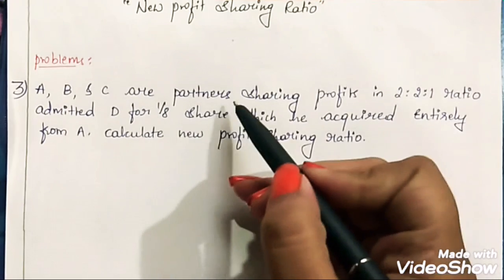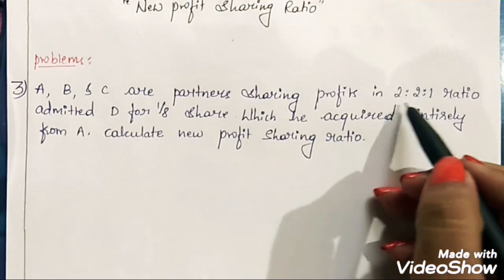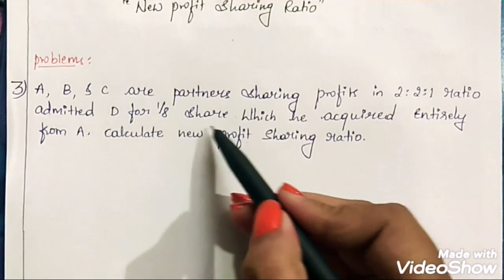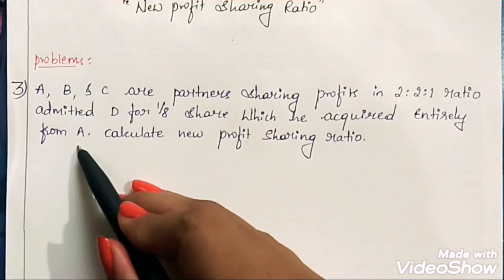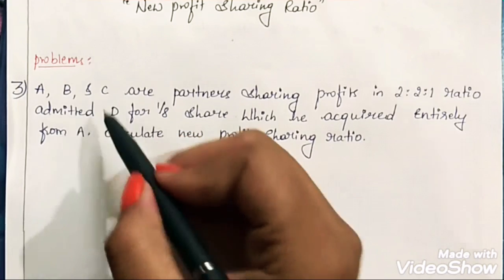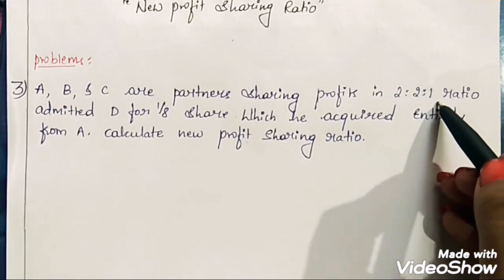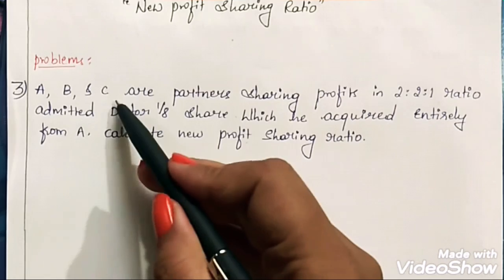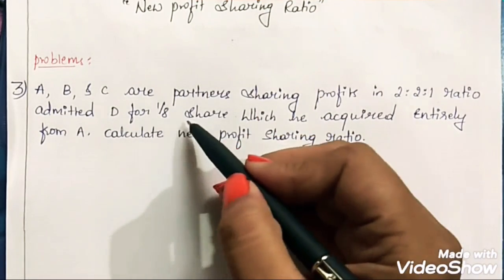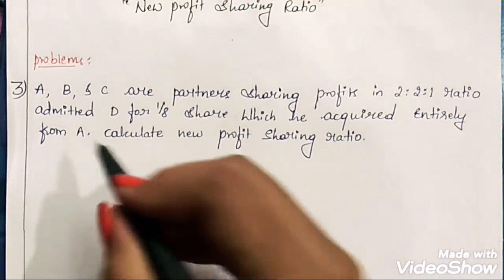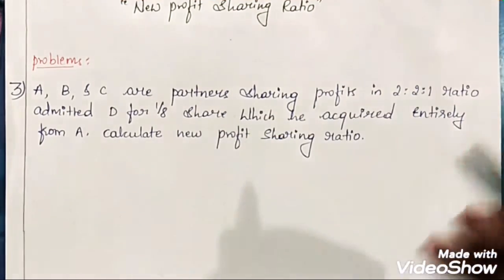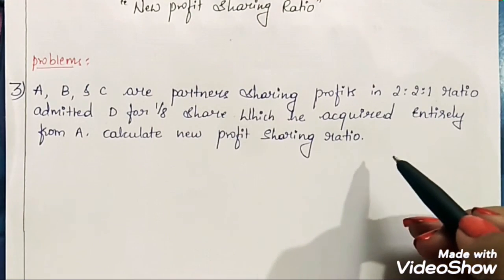A, B and C are partners sharing profits in 2:2:1 ratio. D is admitted for 1/8th share which he acquired entirely from A. So basically here there are 3 partners, their profit sharing ratio is given, and they are admitting D as a new partner in the firm. D should be given 1/8th share of the profits which he totally acquired from A. So here A is the only sacrificing partner, and we are asked to calculate the new profit sharing ratio.